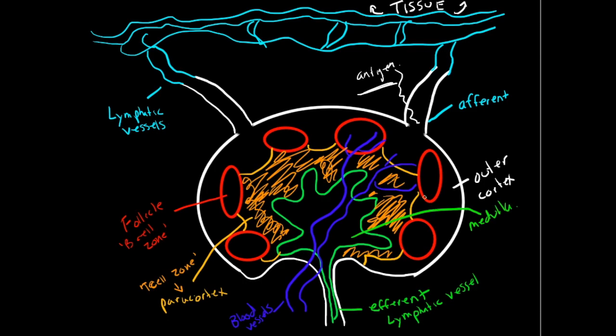So what the medulla is, is just phagocytic macrophages, antibody secreting plasma cells, and some activated memory T cells and B cells that are moving to the efferent lymph.